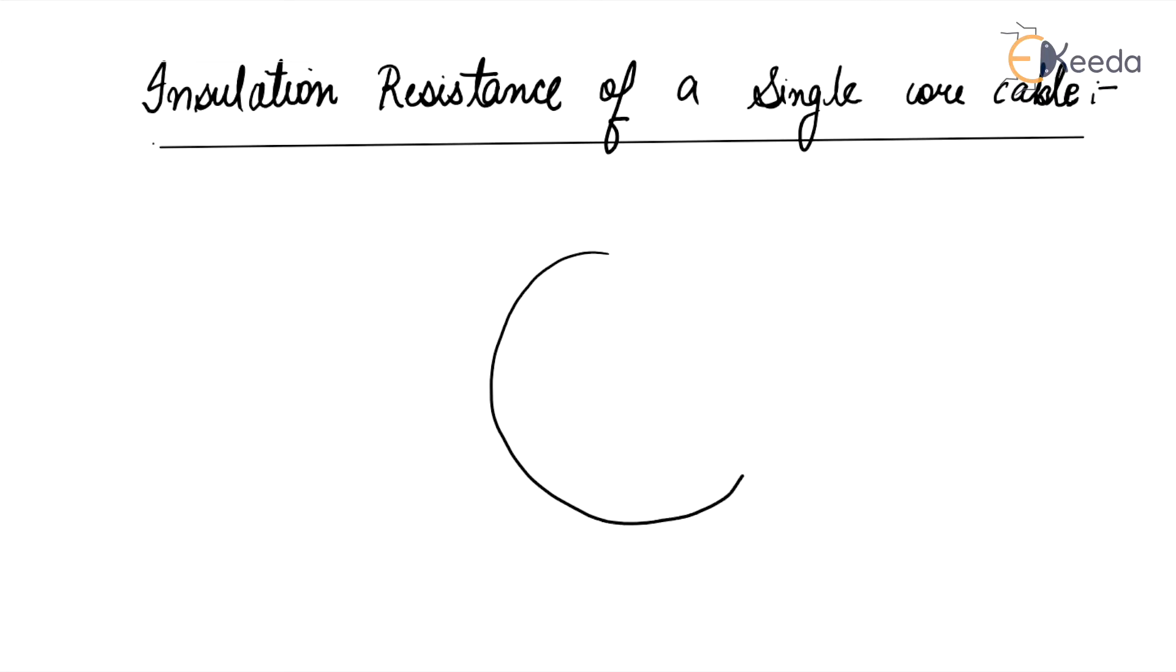This is a cable. It consists of a conductor whose radius is r and sheath radius is R.